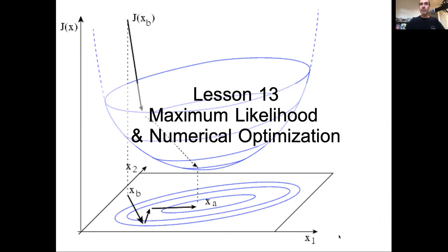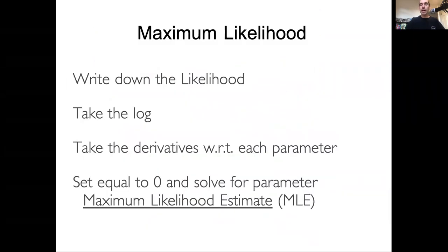Okay, so to review, maximum likelihood worked by: we start by writing down the likelihood, we then took the logs, we then took the derivatives with respect to each parameter, we set those derivatives equal to zero, and we solved for each parameter. That estimate that we get when we solve for each parameter is known as the maximum likelihood estimate. We showed how we could apply this to simple problems like finding a mean and a standard deviation.